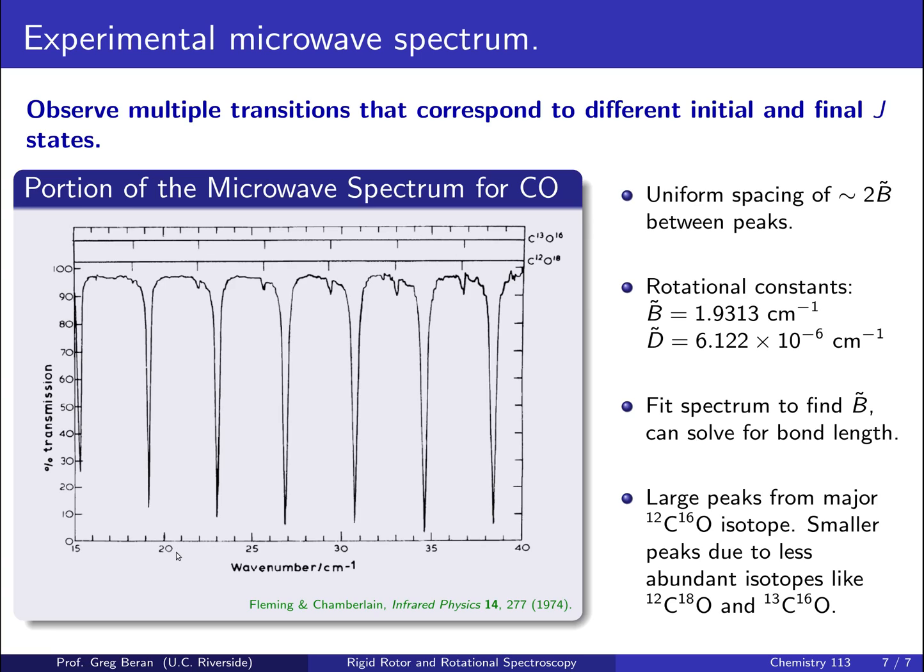In this case, the rotational constant B is just a little bit less than two wavenumbers, and so, we expect uniform spacing of around two times B, or just under four wavenumbers here. And if you stare at the x-axis on this scale, you will see that the gaps between peaks are about four wavenumbers.